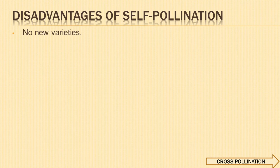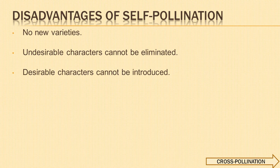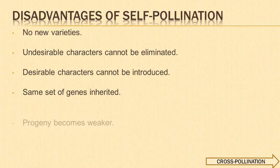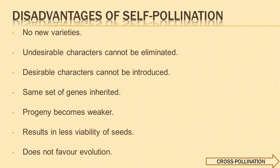Disadvantages of self-pollination: No variation and therefore there is no chance of forming improved varieties or new species. Undesirable characters cannot be eliminated. Desirable characters cannot be introduced in the offspring. Same set of genes are inherited generation after generation. In the long run, the progeny becomes weaker and susceptible to diseases. Continuous self-pollination results in less viability of seeds. It does not favor the process of evolution.